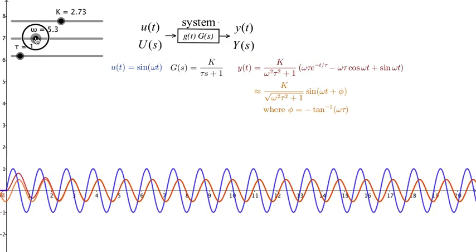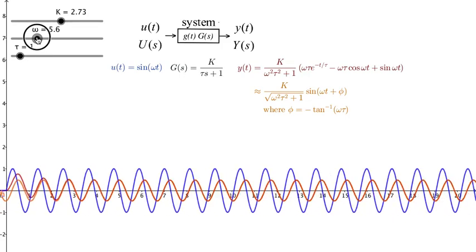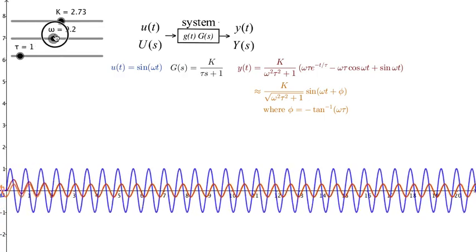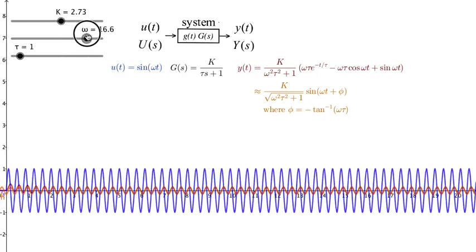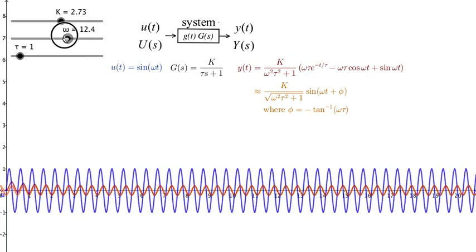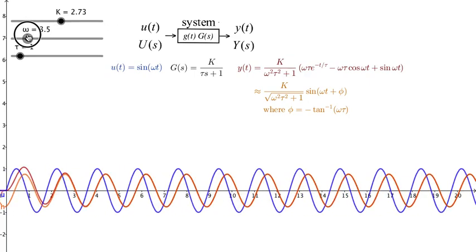So we can see at low frequencies here, the output is actually larger than the input. But as the frequency increases, the output becomes smaller. And this is a general property for most real systems that if the input moves very quickly, the system really can't keep up and we end up with a system that doesn't actually move. So if I make this frequency very very high, we can see that the output almost doesn't move at all.